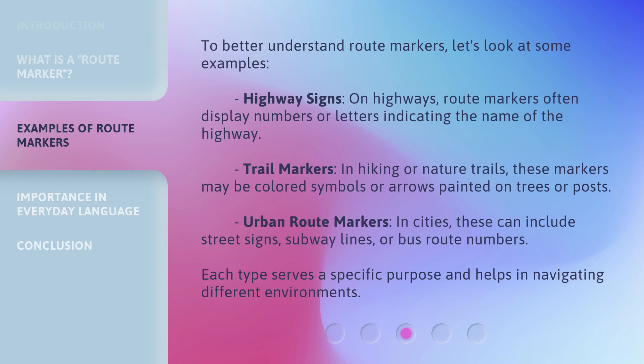To better understand route markers, let's look at some examples. Highway signs: on highways, route markers often display numbers or letters indicating the name of the highway. Trail markers: in hiking or nature trails, these markers may be colored symbols or arrows painted on trees or posts. Urban route markers: in cities, these can include street signs, subway lines, or bus route numbers. Each type serves a specific purpose and helps in navigating different environments.